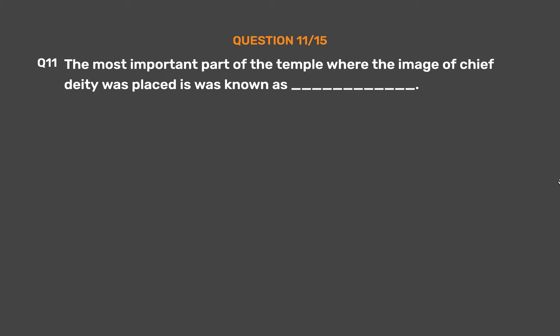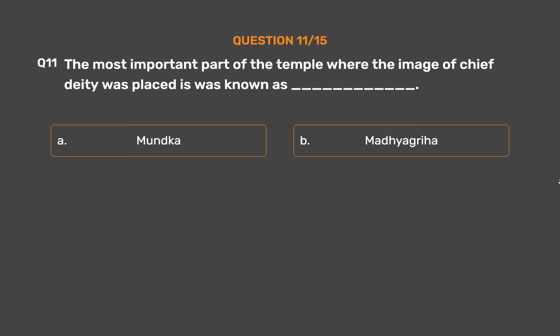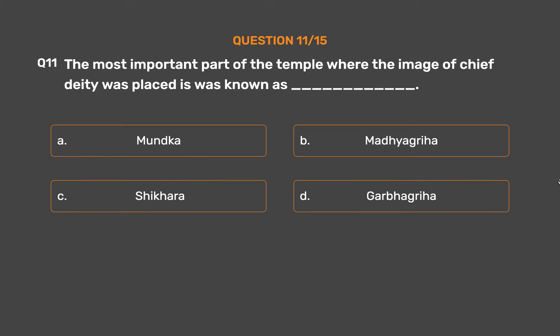Question No. 11. The most important part of the temple where the image of the chief deity was placed was known as: Option A: Mundaka. Option B: Madhya Griha. Option C: Shikhara. Option D: Garbha Griha.